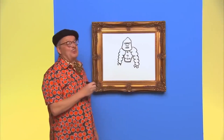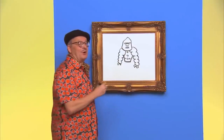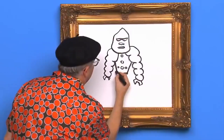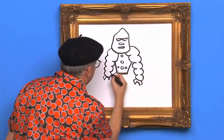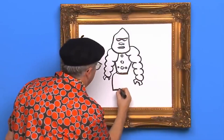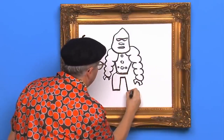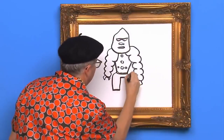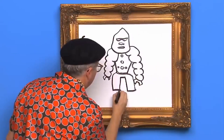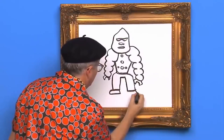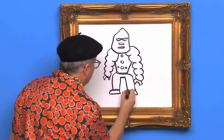Oh, that's right. We need to draw some robot legs for our robot gorilla to walk with. Here they come. Robot gorilla looking good.